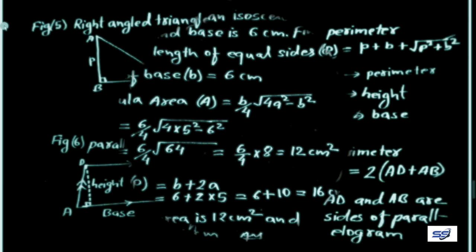Moving to more formulas related to our geometrical set — specifically plane figures. Figure 5 gives us a right-angle triangle. In triangle ABC, one angle is 90 degrees. AB is the perpendicular (height) and BC is the base.